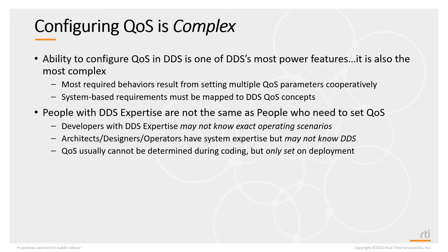Often QoS settings — exact values of quality of service — can't be determined at coding time. You may not be able to hard-code a QoS value into your system because you just don't know what value to use, and you can only set them on deployment. Only when your application has been tested and deployed in a system, and when that system gets put out into the field, is perhaps the only time you can really set the value of some QoS.